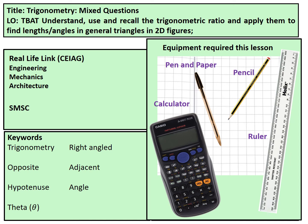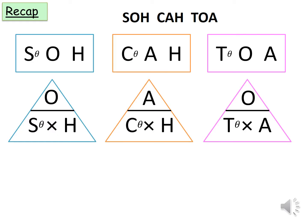This is trigonometry lesson 5 and today we are going to look at mixed questions covering all the trigonometry ratios from the last four lessons, so we need to find the lengths and angles of any right angle triangle. Quick reminder: use the SOH-CAH-TOA mnemonic to memorize the trig formulas as they won't be given in an exam.